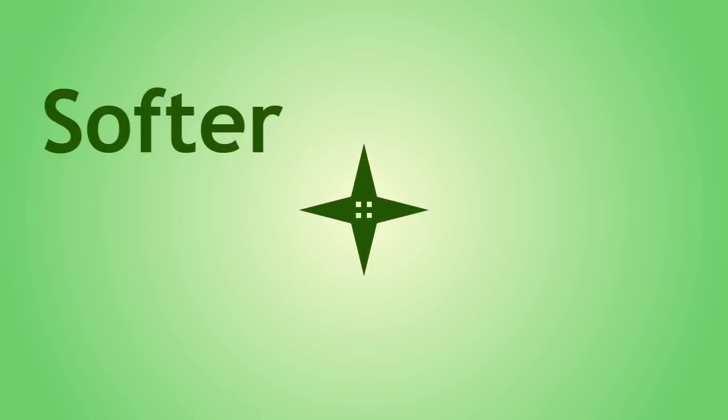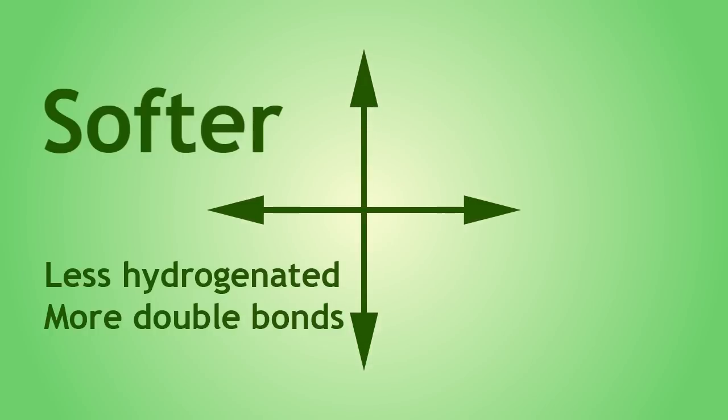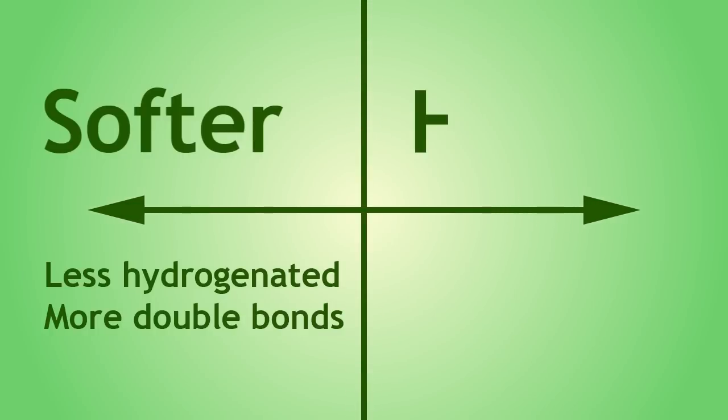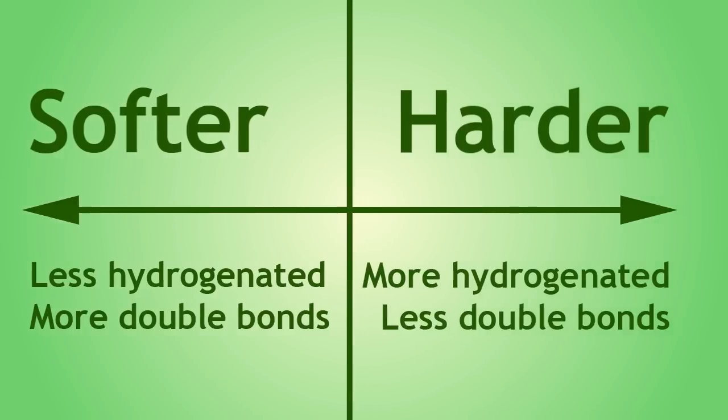Softer and easier to spread margarine is less hydrogenated, whereas harder margarine is more hydrogenated.